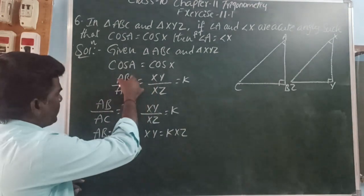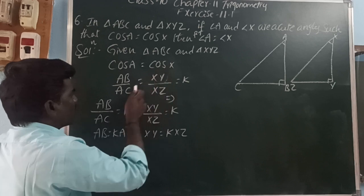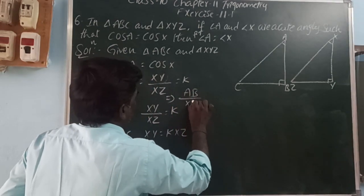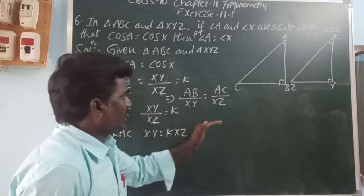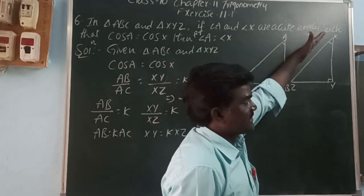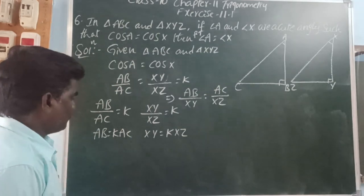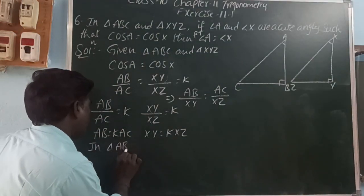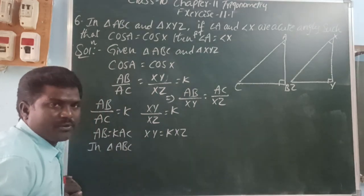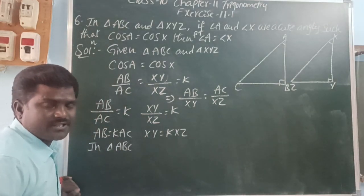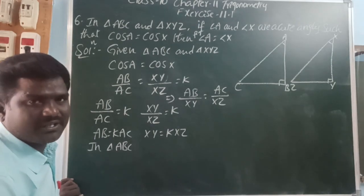From the ratio AB by AC equals XY by XZ, we can rearrange to get AB by XY equals AC by XZ. We can observe these two ratios are equal, but we don't know the third side ratio. So we find it using Pythagoras theorem. When all three side ratios are equal, the two triangles are similar. When two triangles are similar, the corresponding angles are equal.